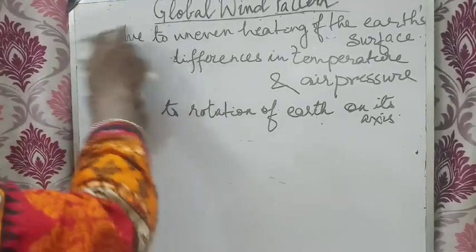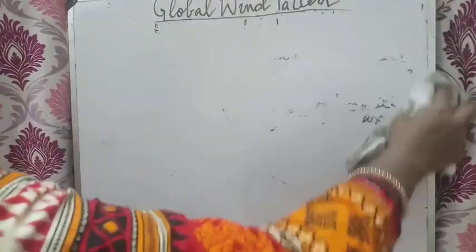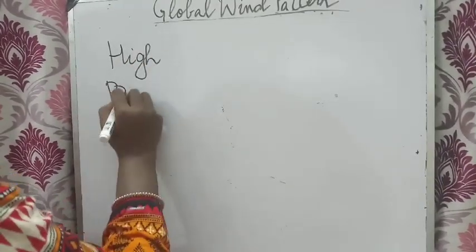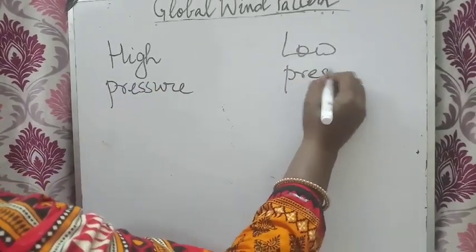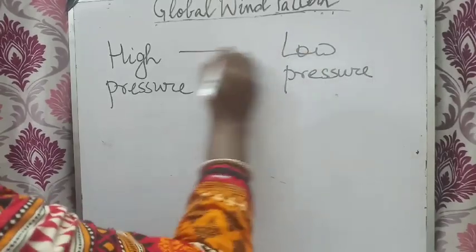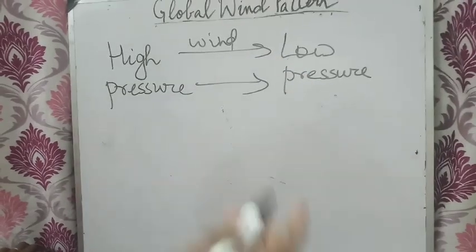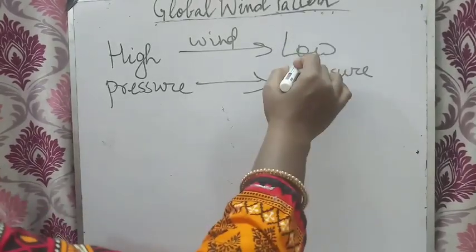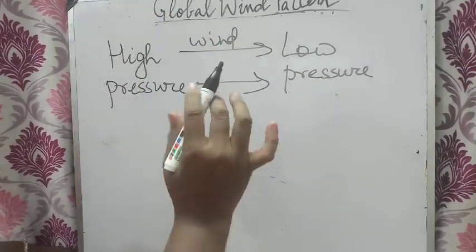Wind always blows from high pressure to low pressure. And why is pressure low? Because the temperature of that region is very high. When temperature is high, pressure will be low. And when temperature is low, pressure will be high. This is inversely proportional — keep this in your mind.